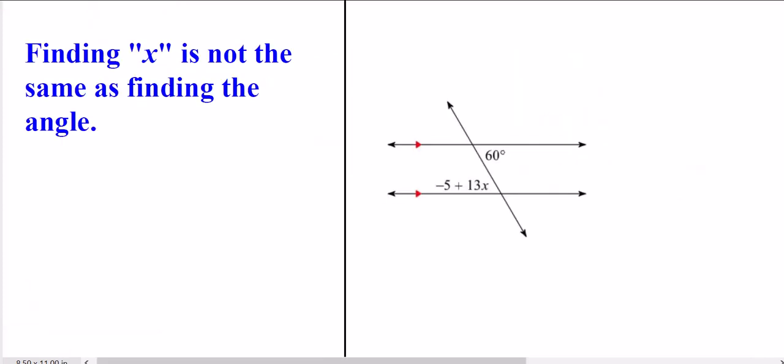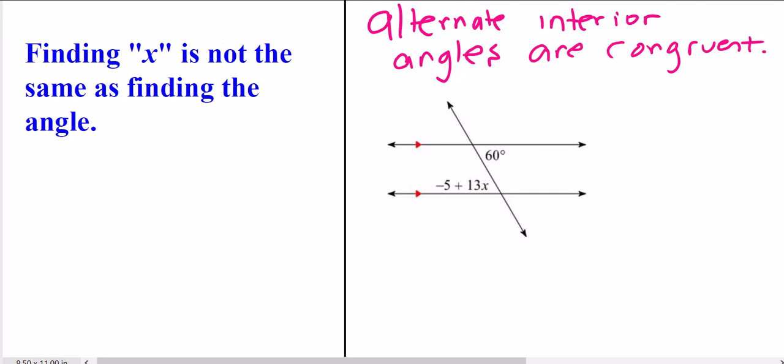For this problem, note that we're in the interior. We're between the two parallel lines. However, we're on opposite sides of the street. That means these are alternate interior angles. What do we know about alternate interior angles? Well, there you go. So, if we set them equal to each other, we have 60 degrees. 60 degrees is equal to that expression.